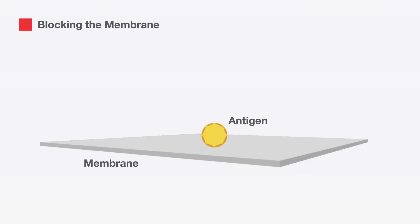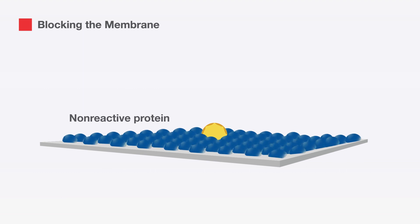The blocking step is critical. It entails blocking the membrane surface with a protein or another molecule that is non-reactive to the antibody that will be used to probe for your target protein or antigen.